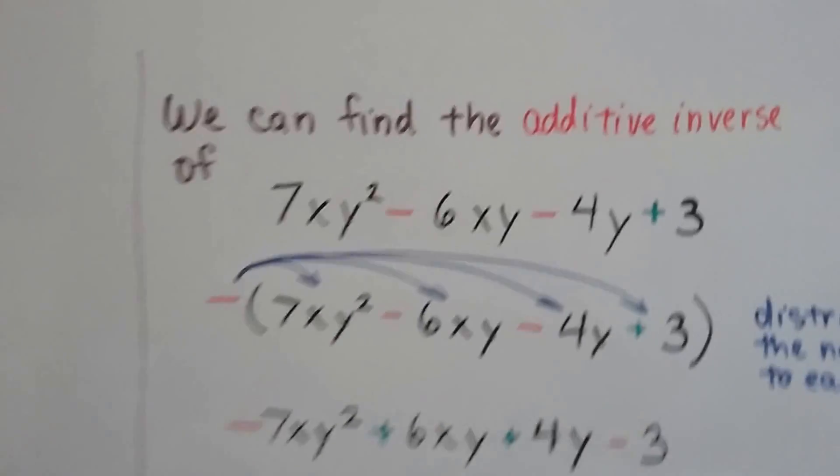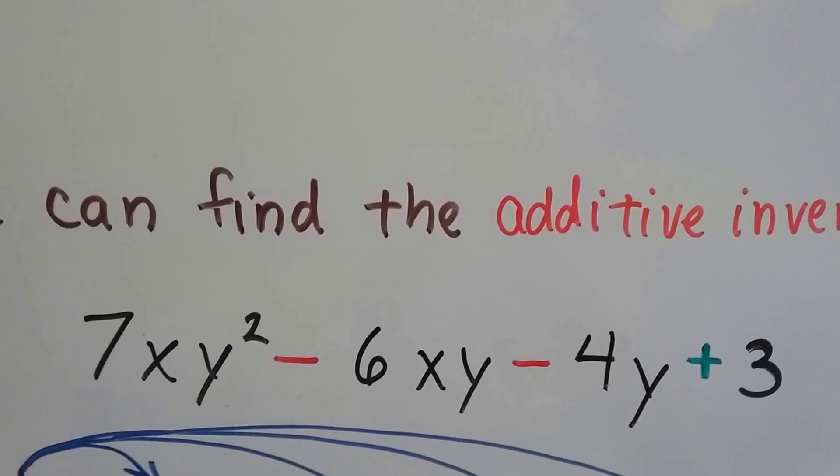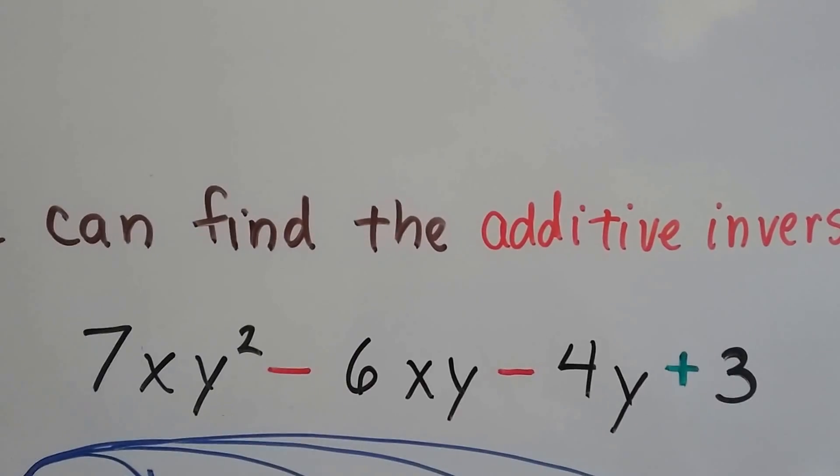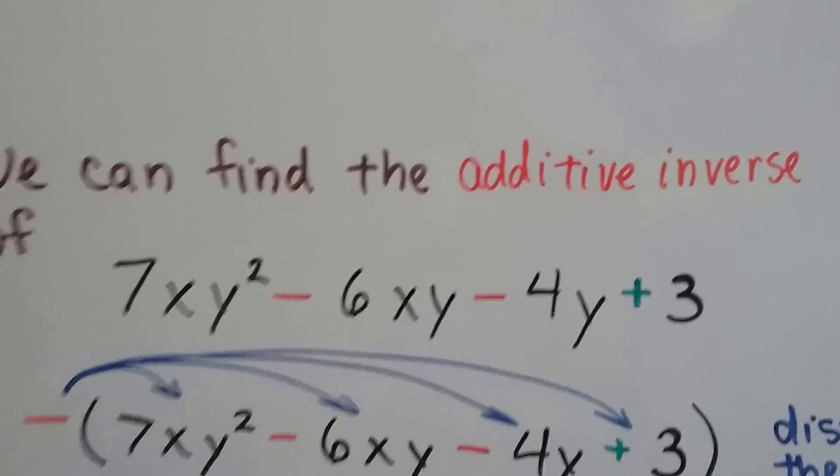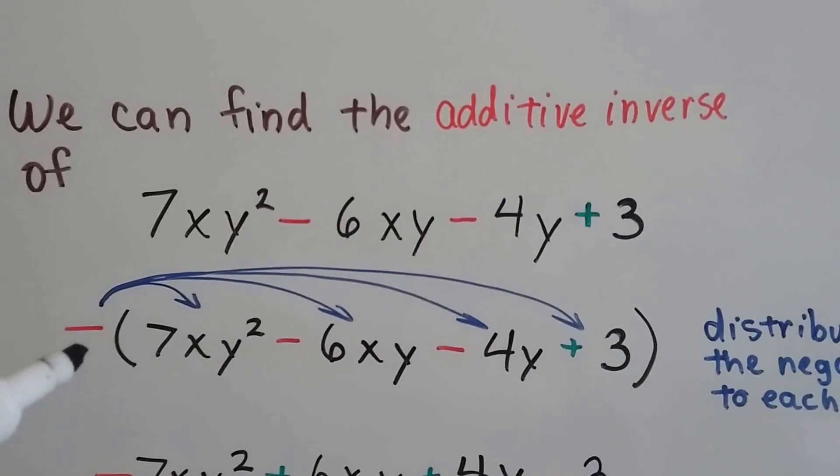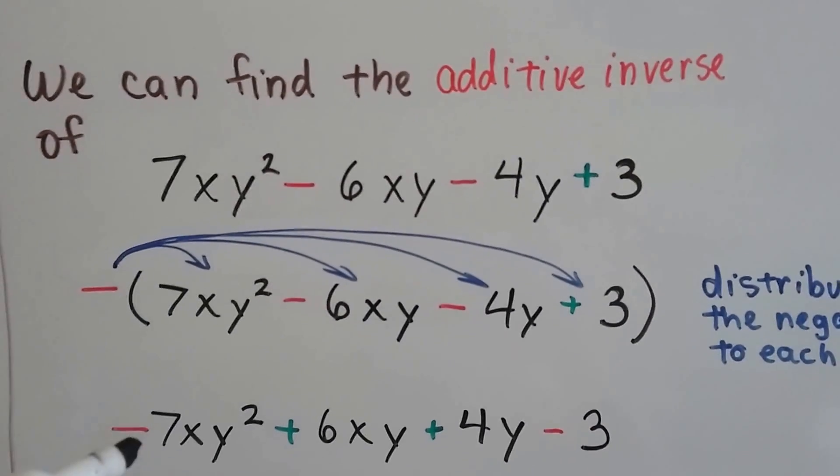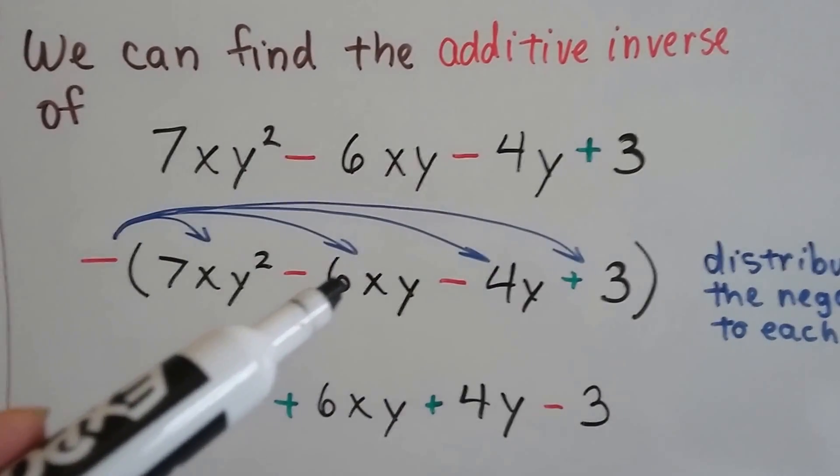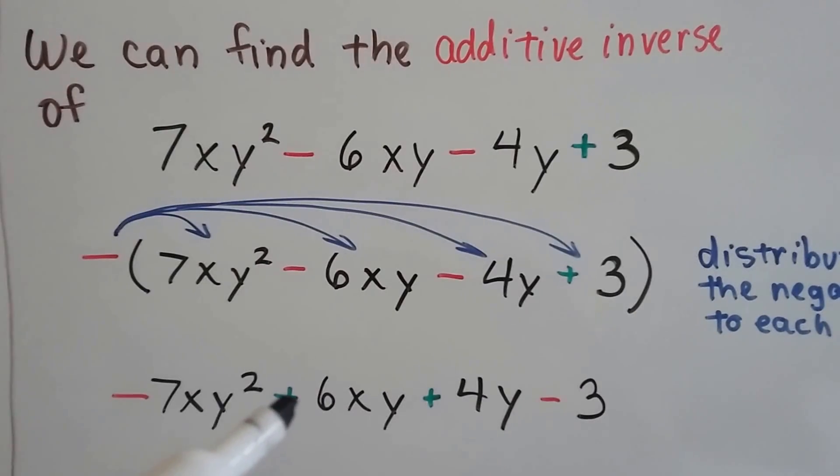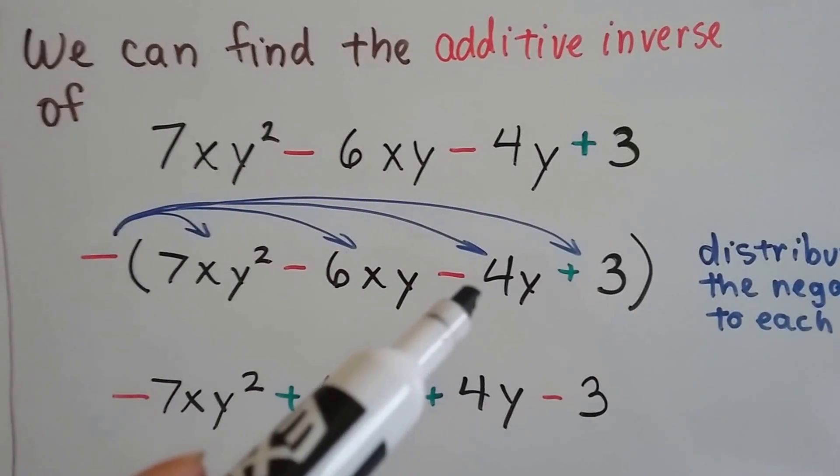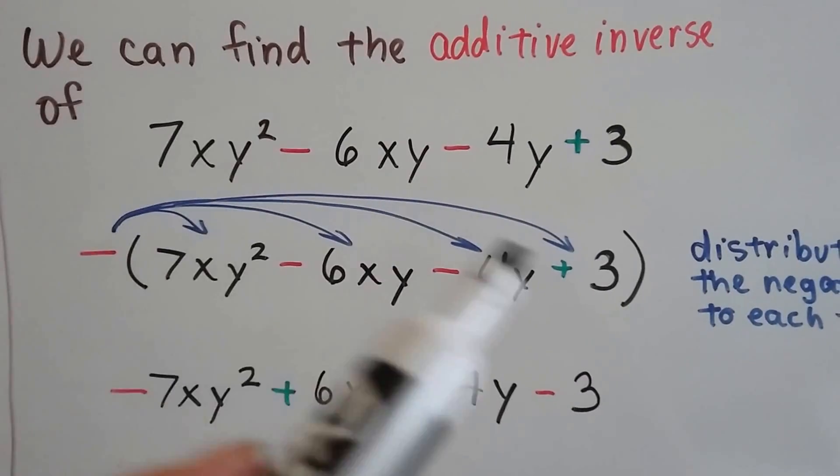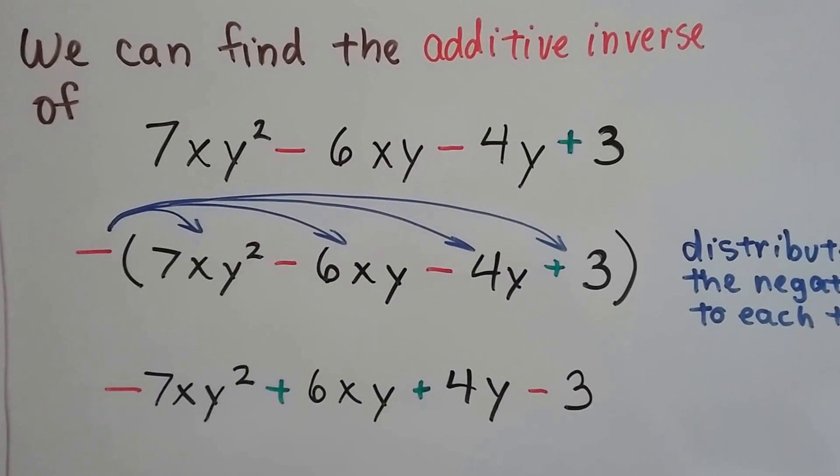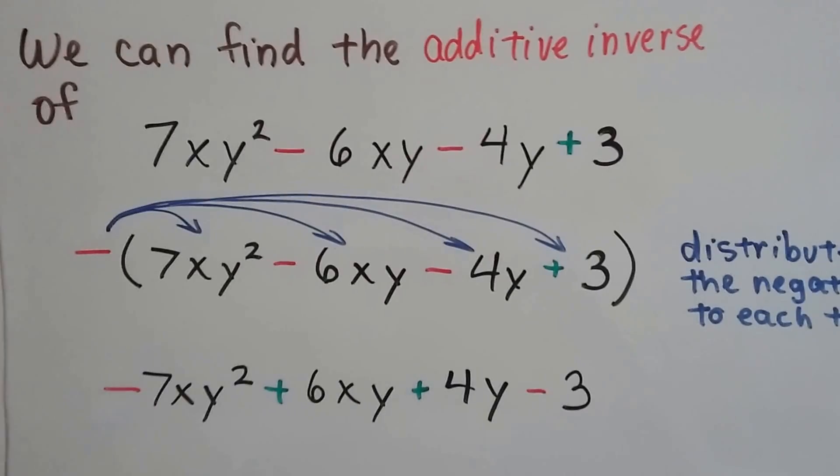Here we have another one. We're going to find the additive inverse. We have a negative sign, a negative sign, and a positive sign. I made them in color with red and green. We're going to distribute this negative to the first term and make it negative 7xy squared. Distribute it to this negative 6xy, and a negative and a negative makes a positive. Distribute it to the negative 4y, make it positive. Distribute it to the positive 3, make it negative. All we did was swap the signs.